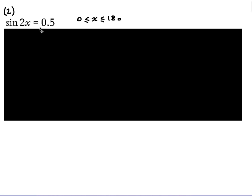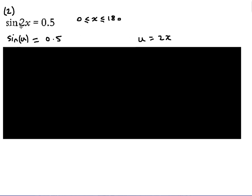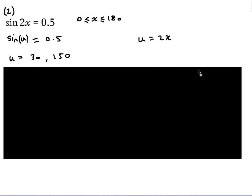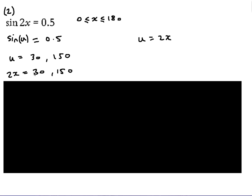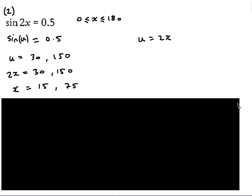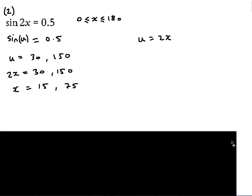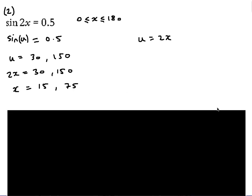Another possible extension is sin(2x) = 0.5. Substitute u = 2x, so solve sin u = 0.5: inverse sine gives 30°, and the second solution for sine is 150°. So u = 30° or u = 150°. Since u = 2x, we get 2x = 30° or 2x = 150°, therefore x = 15° or x = 75°.